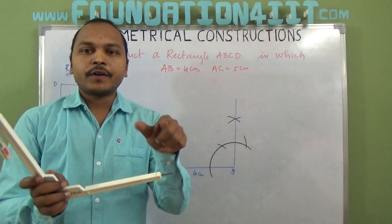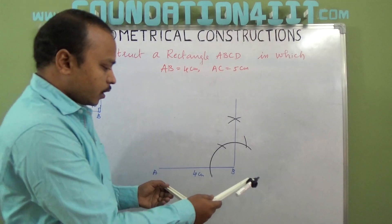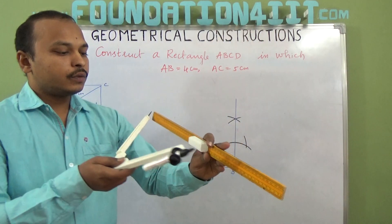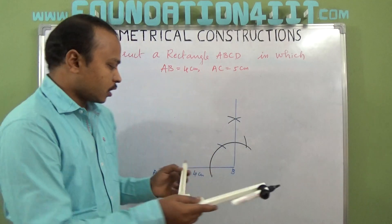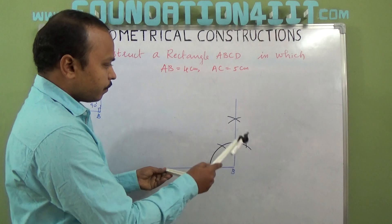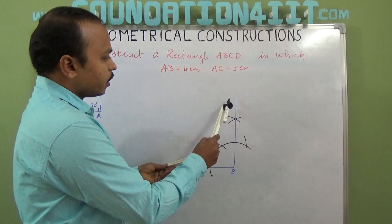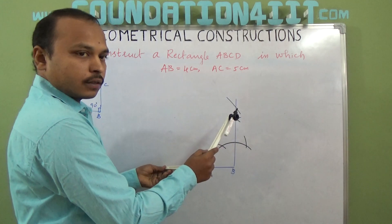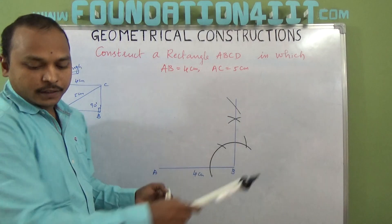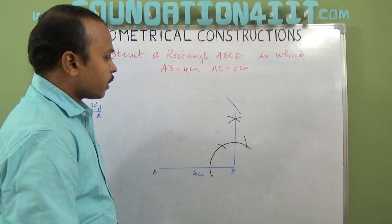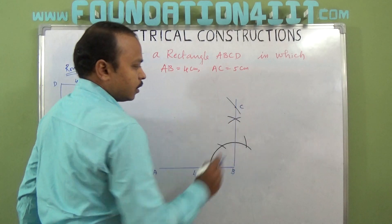Now if you observe the rough diagram, A to C is 5 cm. So from A to C we need to take 5 cm using the scale. From 0 to 5 cm radius we need to take. From A, 5 cm radius, draw an arc. So that is the point C.